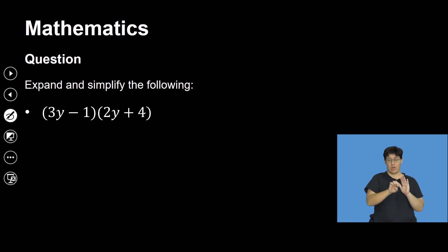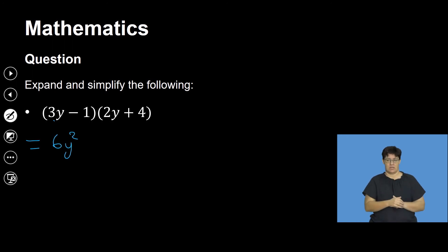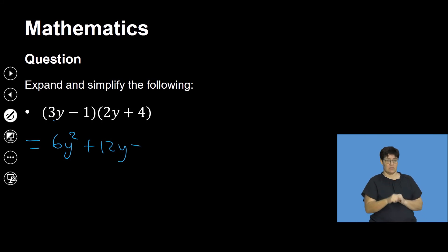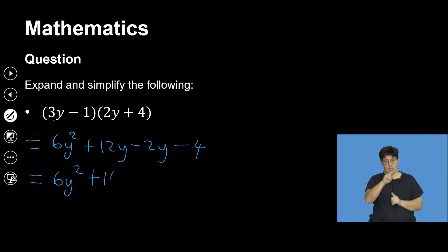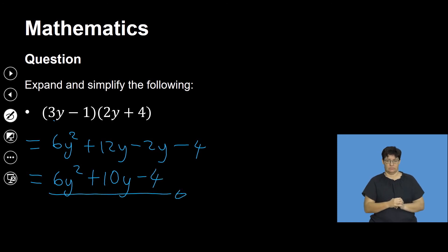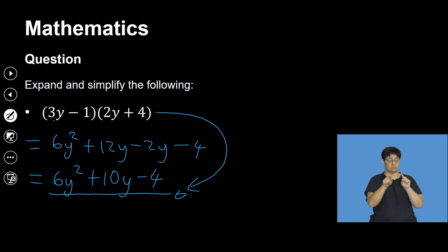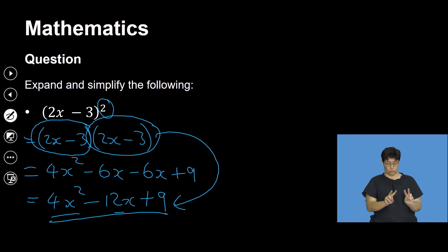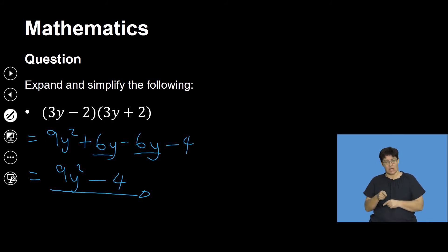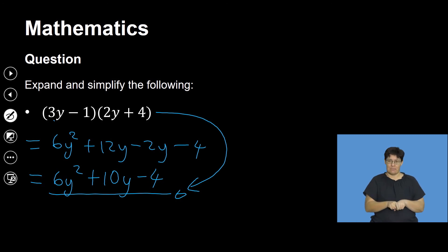Another example: (3y minus 1)(2y plus 4). Multiplying: 3y times 2y gives 6y squared; 3y times 4 gives 12y; negative 1 times 2y gives negative 2y; negative 1 times 4 gives negative 4. This equals 6y squared plus 10y minus 4 — a trinomial. This is the condition where multiplying two binomials gives a trinomial.